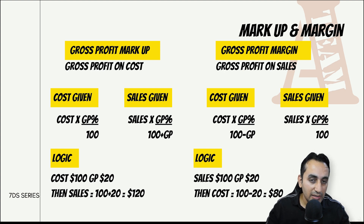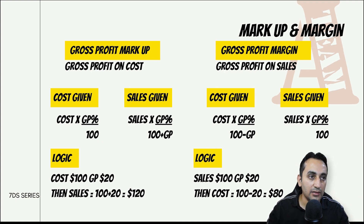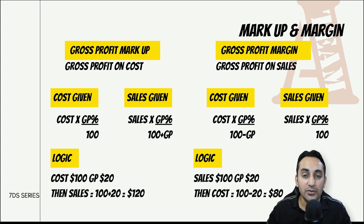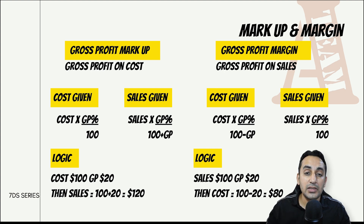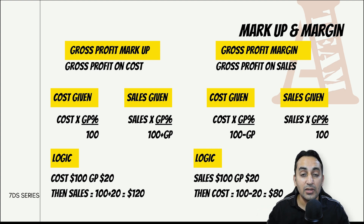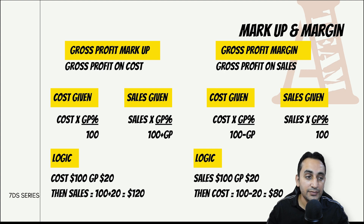Students इस calculation में confused हो जाते हैं - आज finally help करने आया हूँ, इसके बाद confusion नहीं होनी चाहिए। Simple तरीका यह है: अगर gross profit cost के ऊपर calculate करना है तो cost का figure चाहिए। या तो cost का figure दे रखा होगा, या sales का figure दिया है तो उसे sales के equivalent amount से divide करना है।